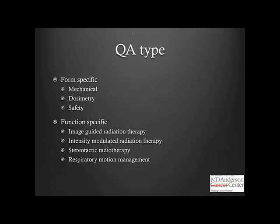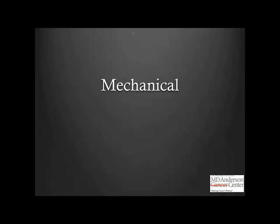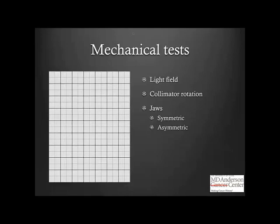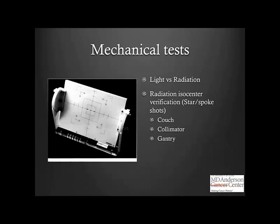The linear accelerator is a combination of mechanical and electrical/electronic components, all of which must be QA'd on a periodic basis. We use a variety of QA tools, starting with something as simple as graph paper, which is useful for basic tests like verifying the light field, collimator rotation, and jaw positions for different field sizes in both symmetric and asymmetric modes. We also use jigs called phantoms that help verify the coincidence of the light field versus radiation field.